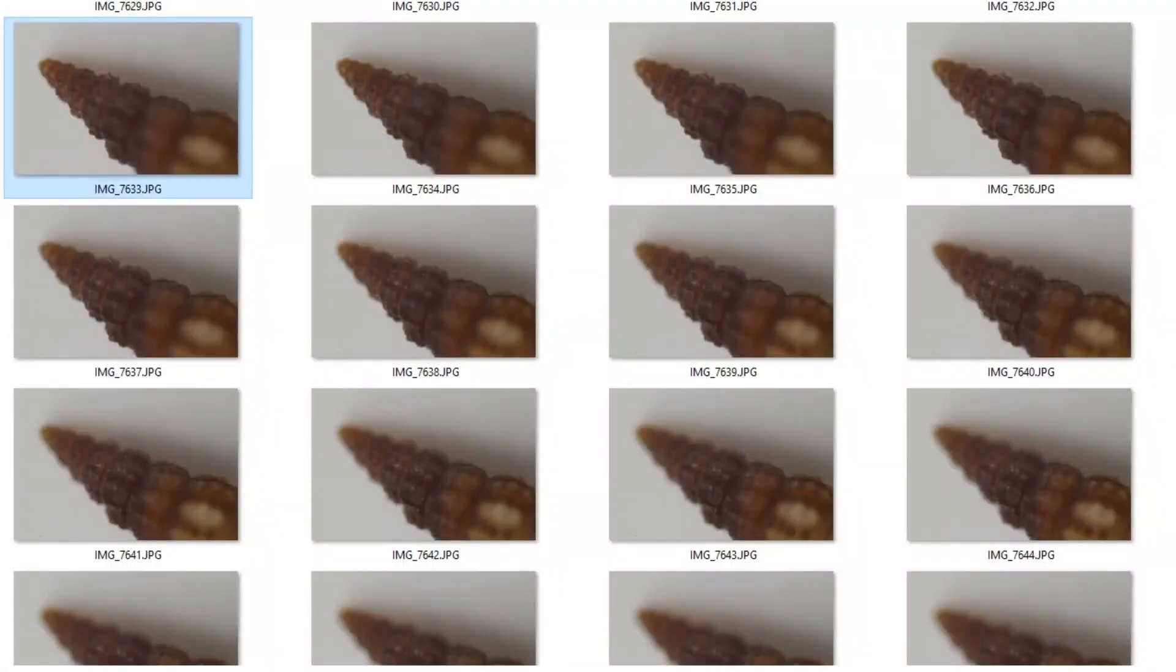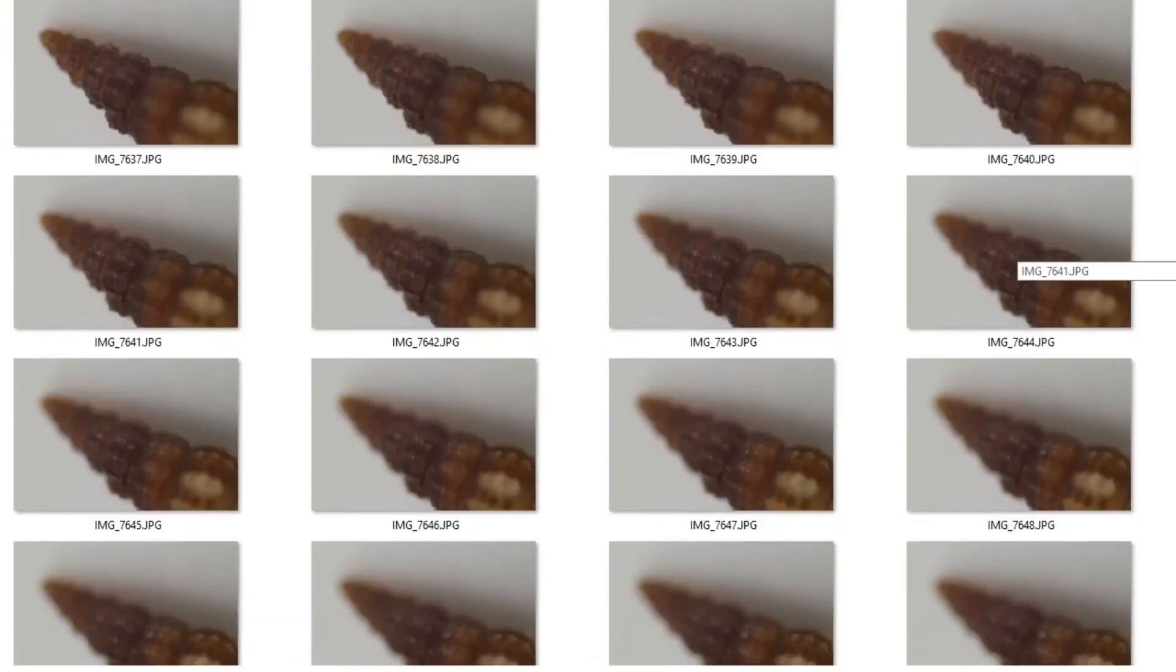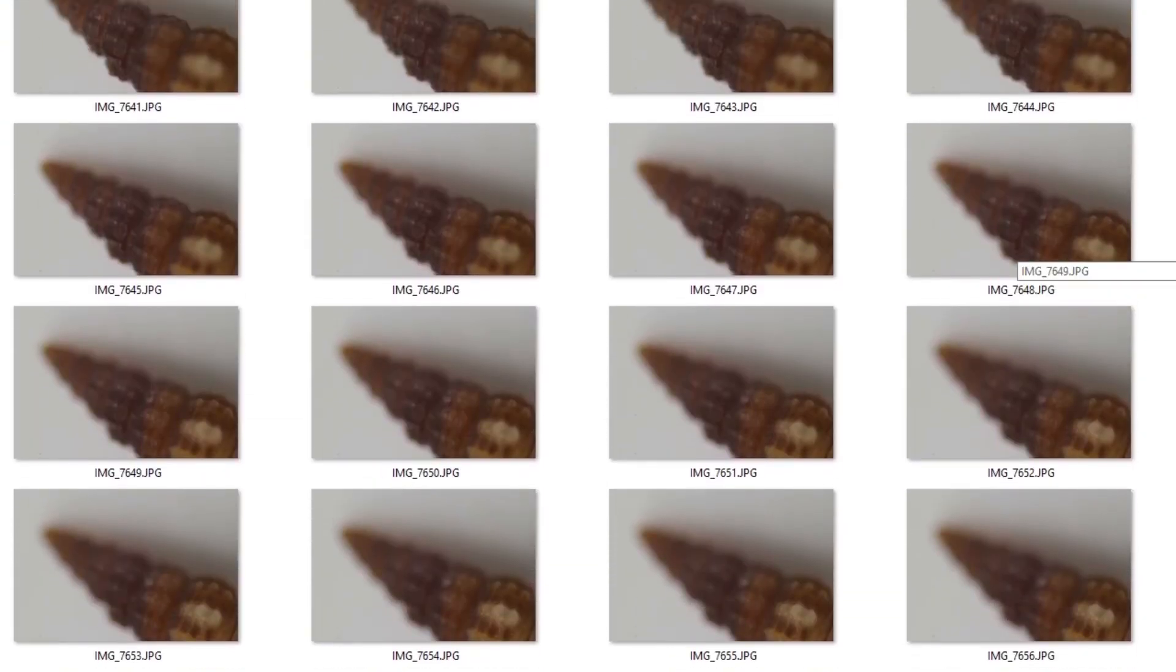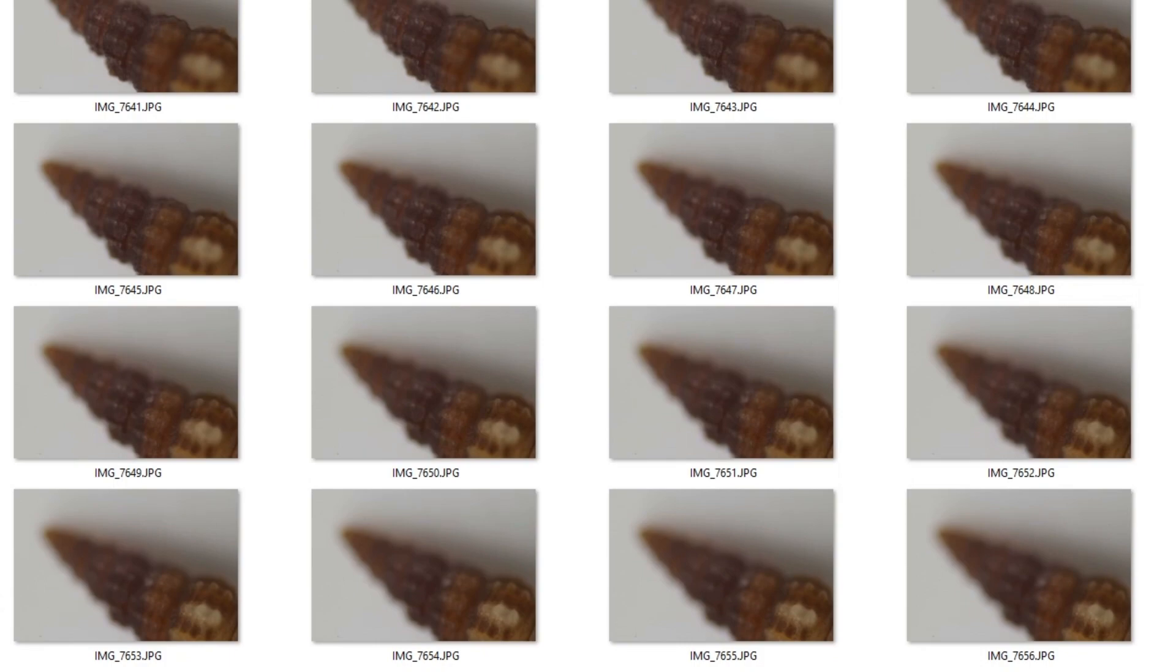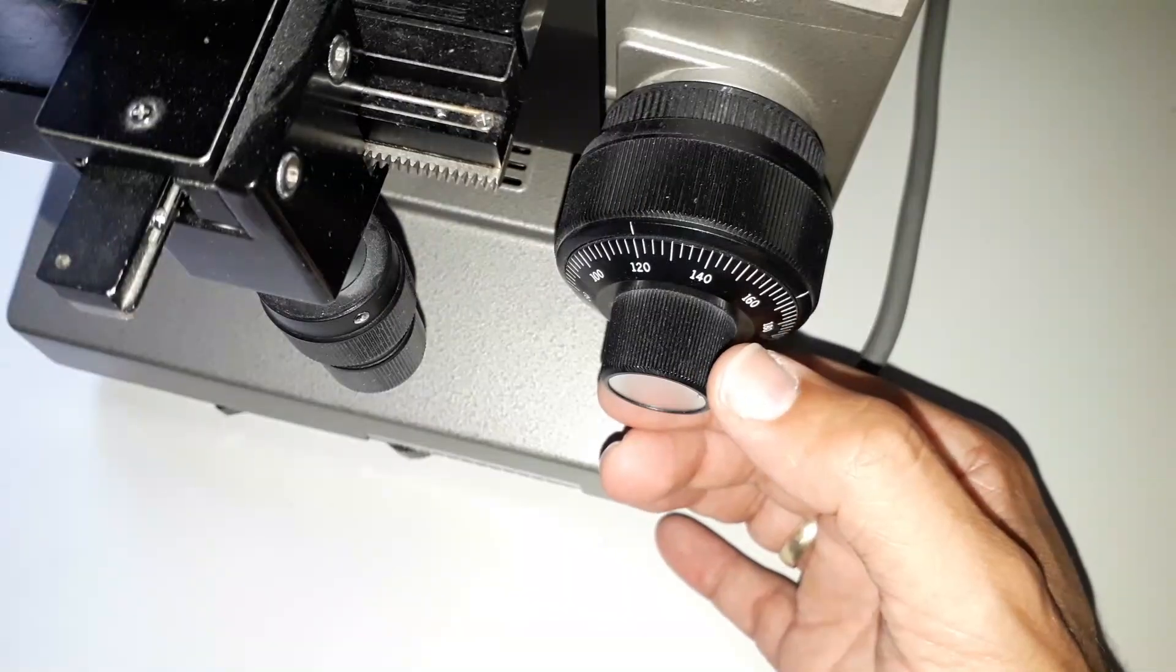So the first thing that you have to do, that's basically step one, is you have to take a series of images all of a different focus and what you have to take care of is that the first image is at the very top of the specimen in focus and then you always turn the focus a little bit and progress further down until you've reached the bottom part of the image.